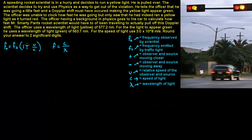He is pulled over. The scientist decides to try and use physics as a way to get out of the violation. He tells the officer that he was going a little fast and a Doppler shift must have occurred, making the yellow light appear green.